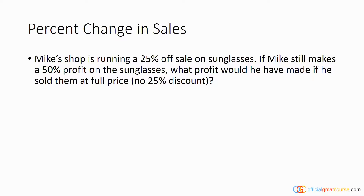If we look at this situation, we actually have three prices in play here. The first price is the sale price or discount price that we discount to. The second price is the full price, and finally we have the cost. So we have these three prices in play.